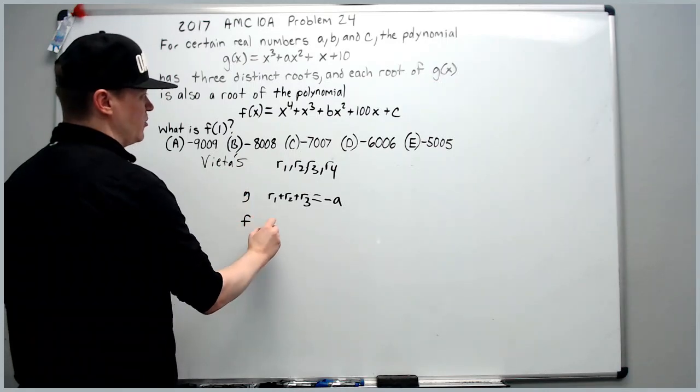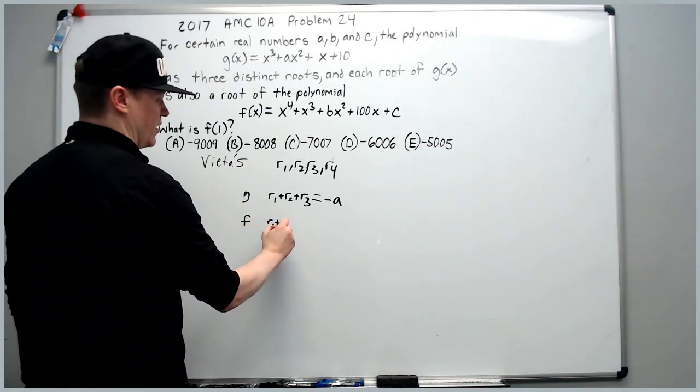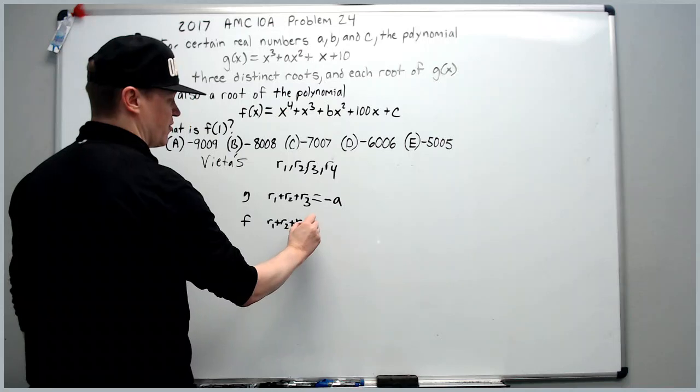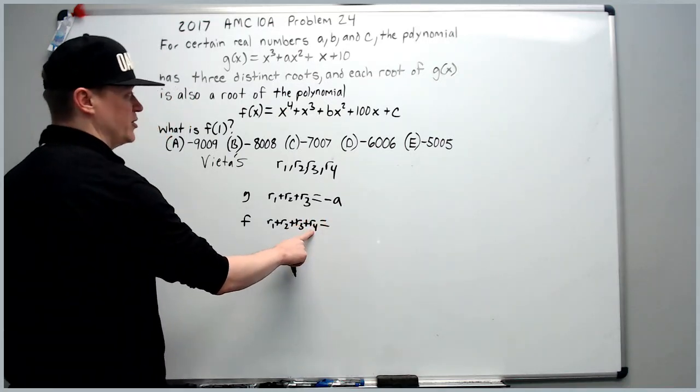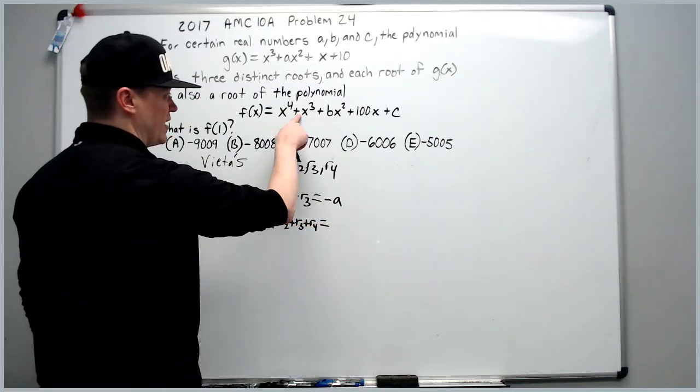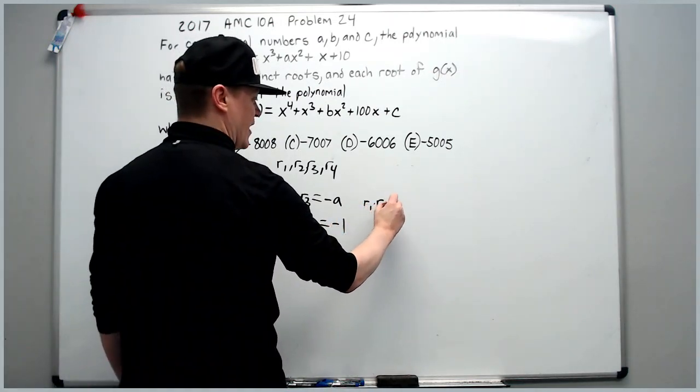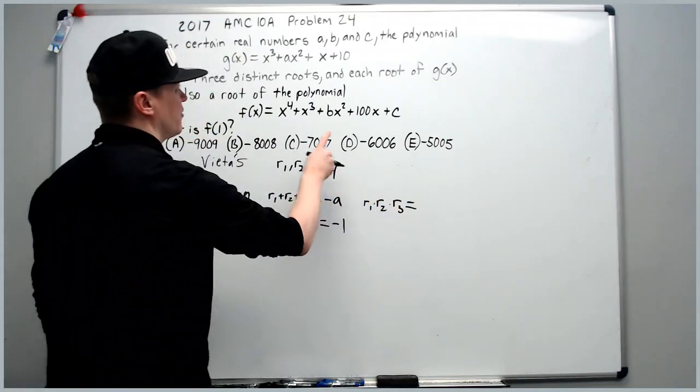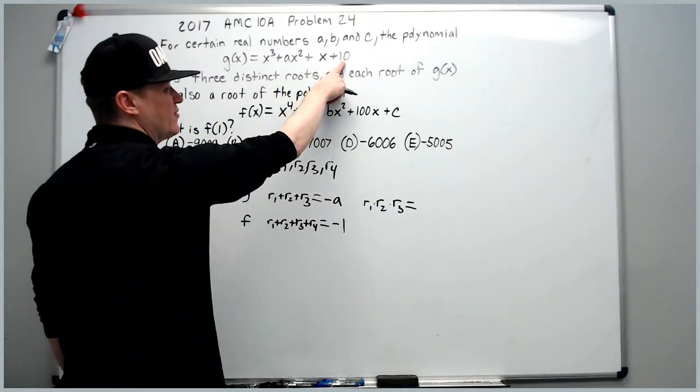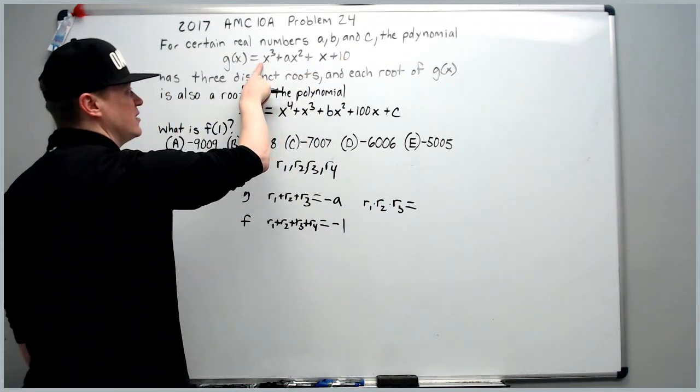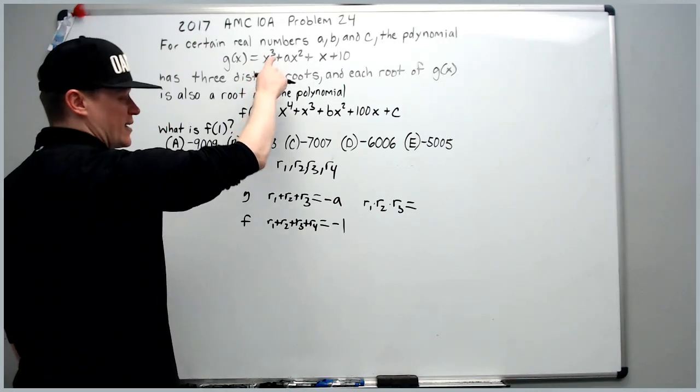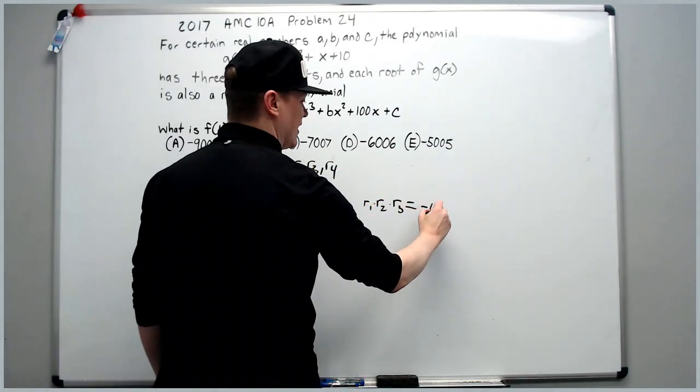For f then, you would have the same thing, r1 plus r2 plus r3, but you add the additional root that f has and it will equal negative 1. The product of the roots for the first one, g of x, r1, r2, r3 is the negative constant over the leading coefficient. For cubics, it's negative, so it's negative 10.